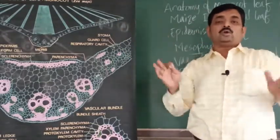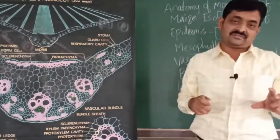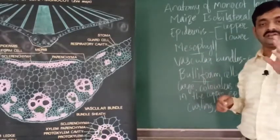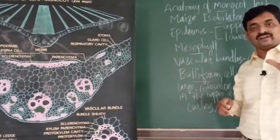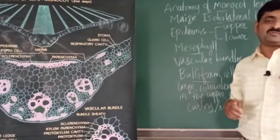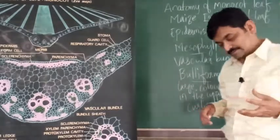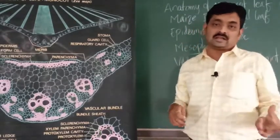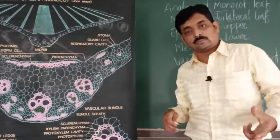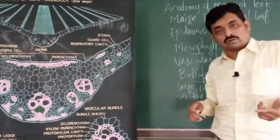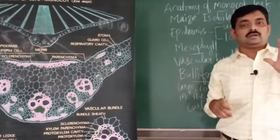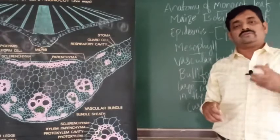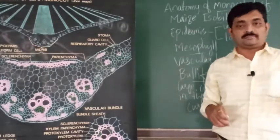Between upper and lower epidermis the tissue of the leaf is called mesophyll. This mesophyll is not differentiated into palisade and spongy — you find one type of cells. Mesophyll cells are modified parenchyma cells; they are green-colored because they contain chloroplasts, which contain chlorophyll involved in photosynthesis.